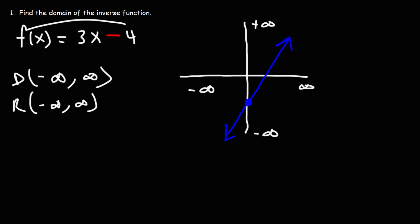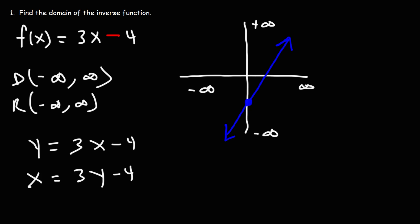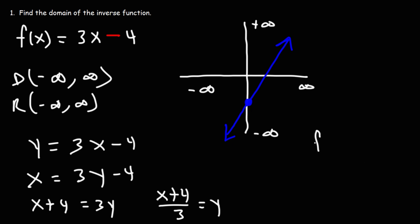Let's go ahead and find the inverse function of f. Replace f with y, and then switch x and y, and then solve for y. If we add 4 to both sides, we get that x plus 4 is equal to 3y. Divide on both sides by 3, we get this. We're going to replace y with the inverse function symbol. So the inverse function is x plus 4 over 3.